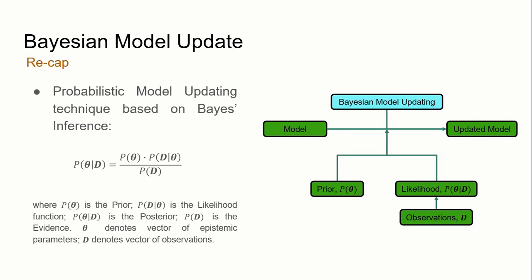As a short revision from the previous lecture, Bayesian model updating is a probabilistic model updating technique based on Bayes inference, described by the following equation. This equation is defined by the prior, which describes prior knowledge of the parameter you wish to estimate; the likelihood function, which gives the degree of agreement between the model and the observations; and the evidence, which is the normalization constant of the posterior distribution.